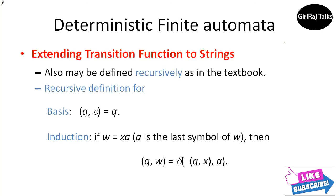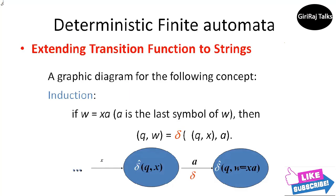Then delta-hat of q comma w equals delta of (delta-hat of q comma x) comma a. To compute delta-hat of q comma x — the state the automaton is in after processing all but the last symbol of W — suppose this state is P, that is, delta-hat of q comma x equals p. Then delta-hat of q comma w is what we get by making a transition from state P on input A, the last symbol of W — that is, delta-hat of q comma w equals delta of p comma a. This concludes the topic of extending the transition function to strings. In the next lecture, you will learn about the language of a DFA.